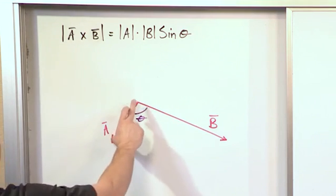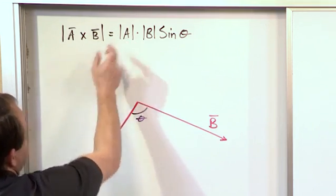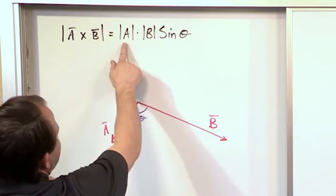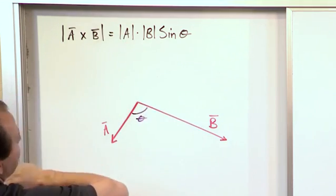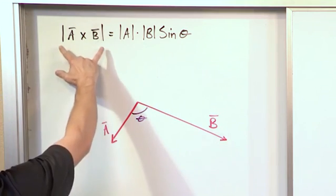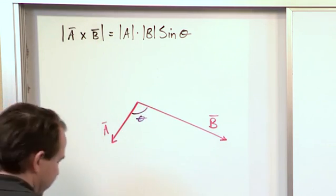Now what we say is, if we look at the length of A, that's magnitude of A, and we look at the length of B, that's magnitude of B, if we take these two magnitudes, multiply them together, and then take the sine of the angle that falls between them, then what we get is the magnitude of the cross product of those two vectors.